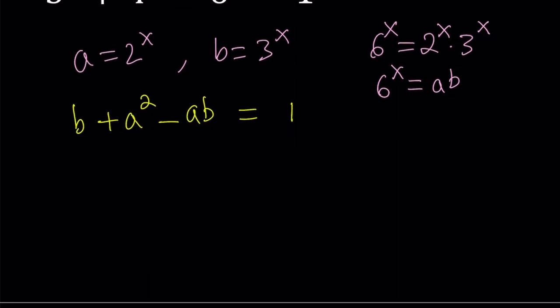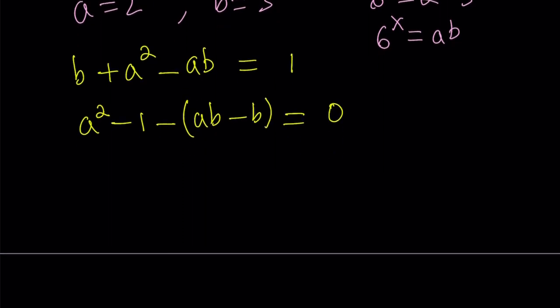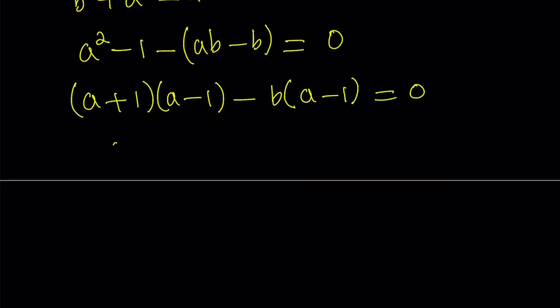So, to solve this equation here's what I'm going to do. I'm going to put the a squared with the negative 1 and then put a minus sign here and write it as ab minus b. And there's a reason behind that you'll see in a little bit. Now, the a squared minus 1 is difference of two squares so I can go ahead and factor it. And this one has a common factor of b which gives us a minus 1. And yay! This is factorable by grouping.